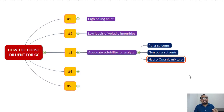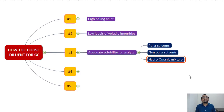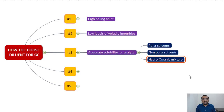You can also consider using hydro-organic mixtures. If you use 100% water as a diluent, you may end up with a lot of injection-to-injection variability. To reduce that variation, you can use a hydro-organic mixture — for example, water combined with an organic solvent like dimethylformamide — in an appropriate ratio, and you will see a drastic improvement in injection-to-injection reproducibility.